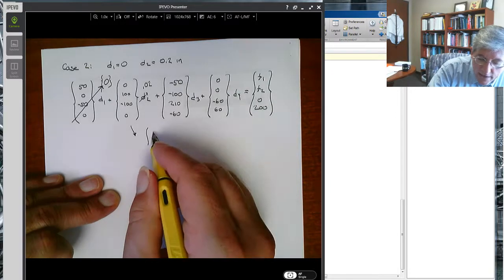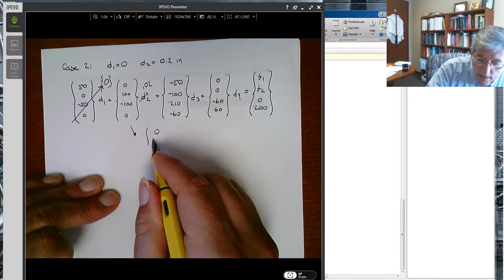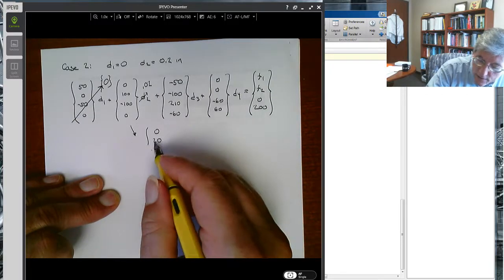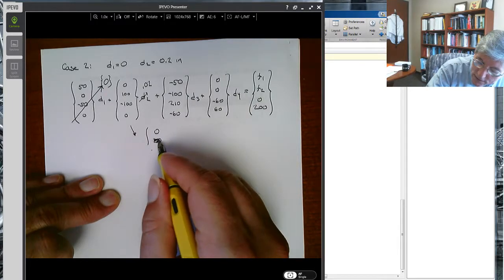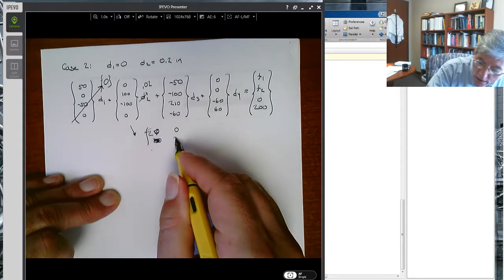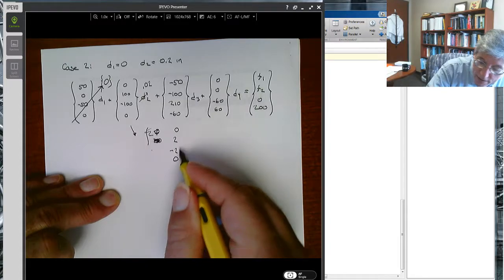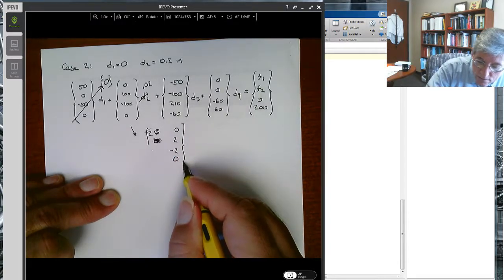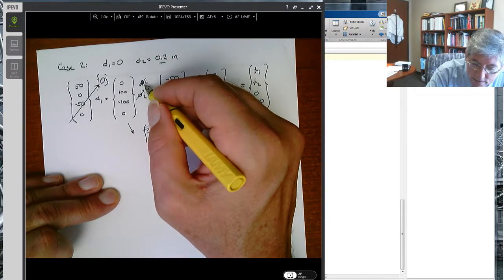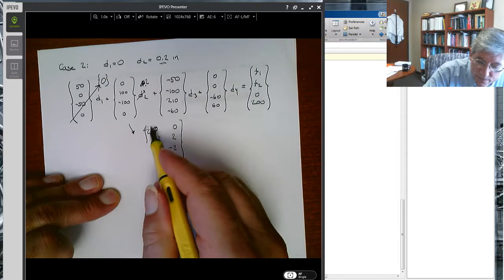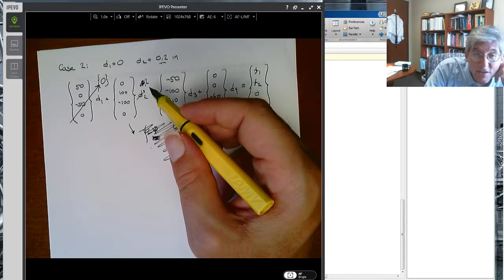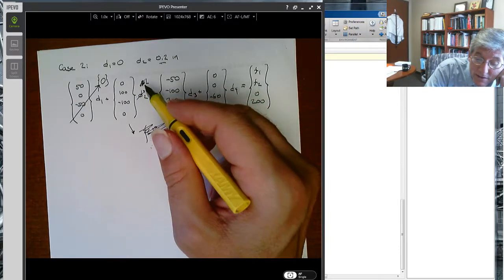So this basically becomes, if we do this multiplication out, I get 0, 20, wait no, not 20. I'm sorry, this becomes 0, 2, minus 2, and 0. Wait, 0.02. What am I doing? It's 0.2. I don't know, it's 0.2 here. I am so sorry, it's the end of the day. Okay, 0.2. Wow, let's erase everything.